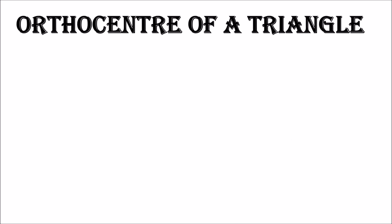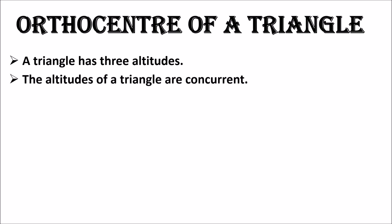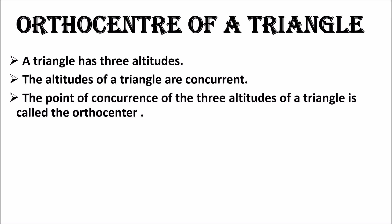Ortho center of a triangle: a triangle has three altitudes. The altitudes of a triangle are concurrent, meaning they pass through a single point. The point of concurrence of the three altitudes of a triangle is called the ortho center. So what is the ortho center? It is a point where all altitudes meet each other.